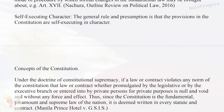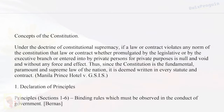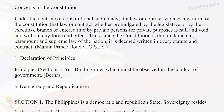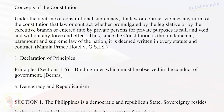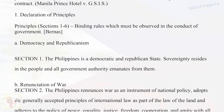Self-executing character: The general rule and presumption is that the provisions in the Constitution are self-executing in character. Under the doctrine of constitutional supremacy, if a law or contract violates any norm of the Constitution, that law or contract — whether promulgated by the legislative or executive branch or entered into by private persons — is null and void and without any force and effect. Since the Constitution is the fundamental, paramount, and supreme law of the nation, it is deemed written in every statute and contract. (Manila Prince Hotel v. GSIS)